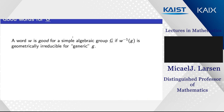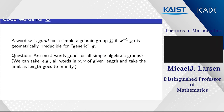Here is an important open question: are most words good for all simple algebraic groups? So far we've been discussing very special families of words. If we look at all words of a given length and take the limit as length goes to infinity, are most of them good — in the sense that we can use the Lang–Weil method to show surjectivity along the q→∞ direction for finite simple groups?